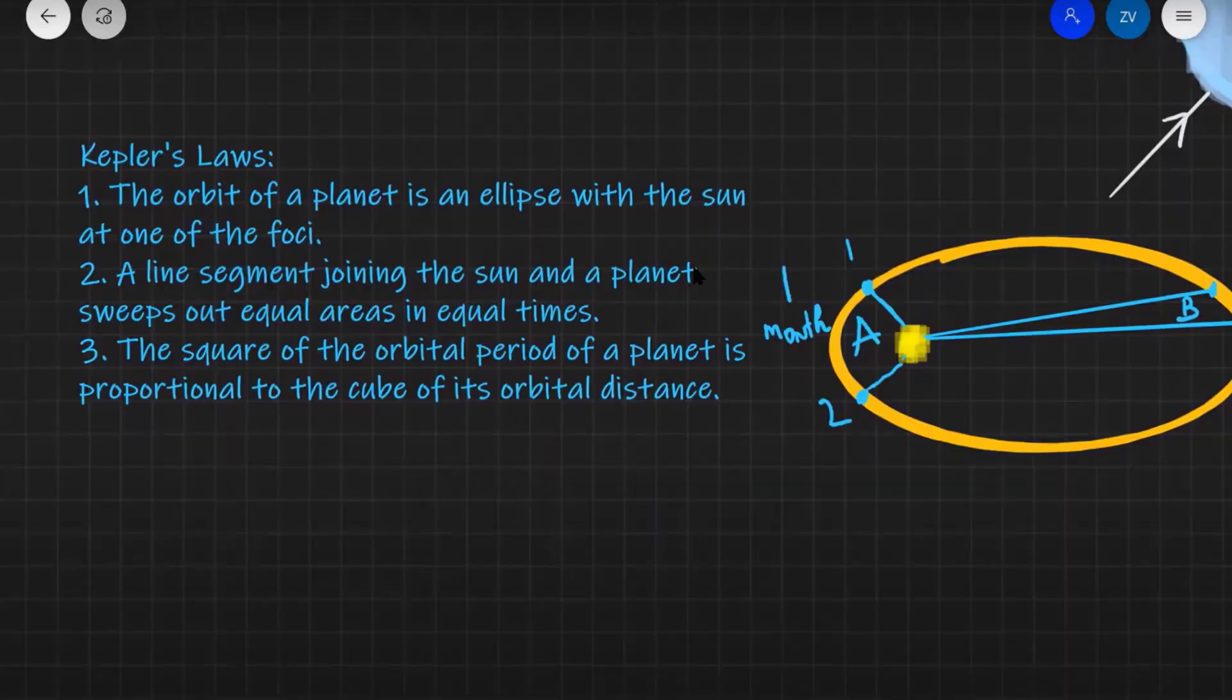It is also worth revising quickly the first two laws. Kepler's first law, the orbit of a planet is an ellipse with the sun at one of the foci. Kepler's law number two, a line segment joining the sun and a planet sweeps out equal areas in equal times.